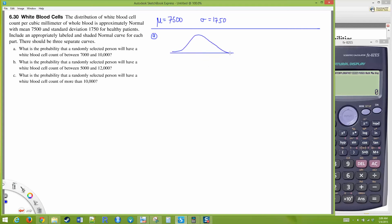We're going to draw a normal model centered at 7500. We want to know between 7000, which is less than 7500, and 10,000, which is more. We want to find the area in between. This is going to involve a few calculations. First, we'll find the area to the left of 10,000, then the area to the left of 7000. The area to the left of 10,000 minus the area to the left of 7000 will give us the area we want.